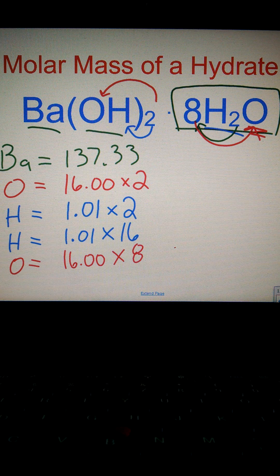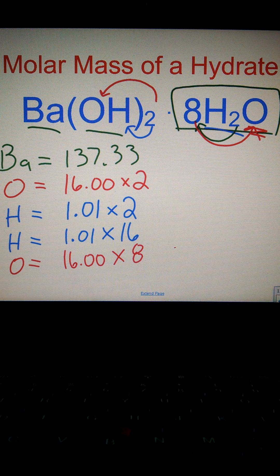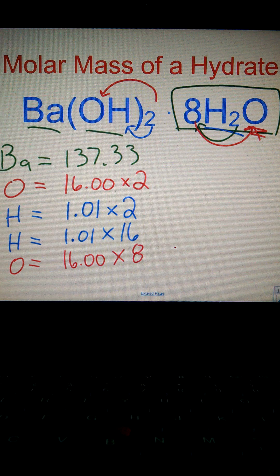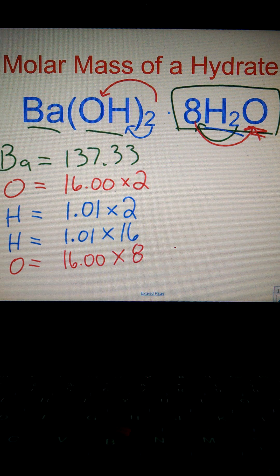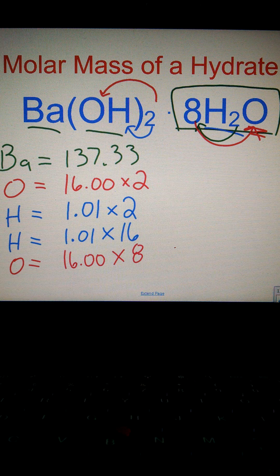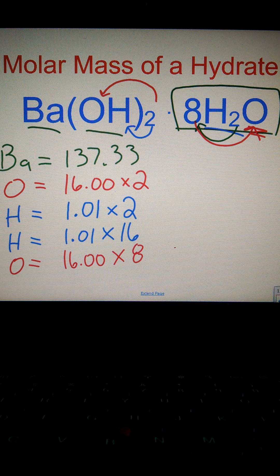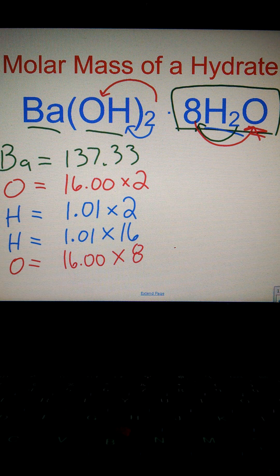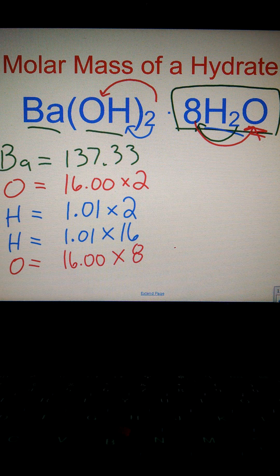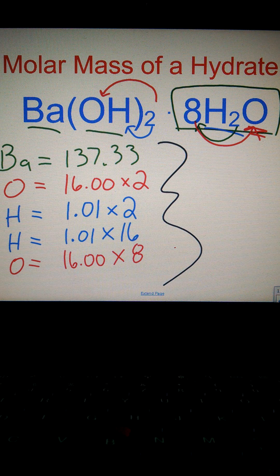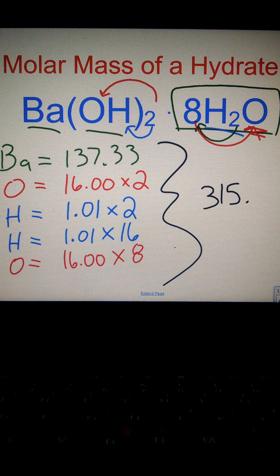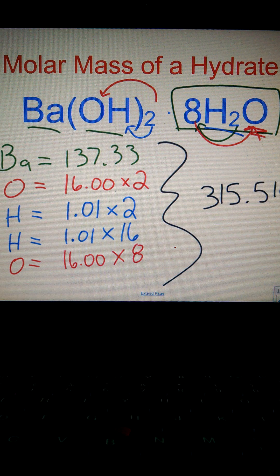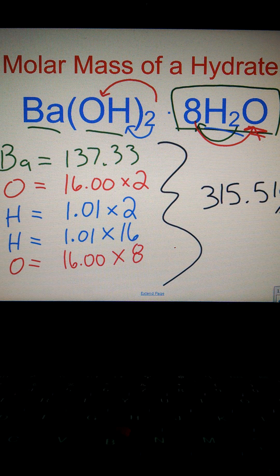So if we add all this up, we'll take 137.33, add it to the oxygens, add it to the hydrogens, and finally add it to the oxygens and hydrogens from water. We will end up with 315.51 grams per mole.